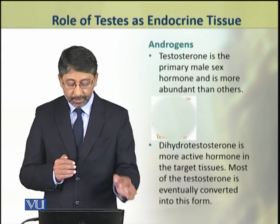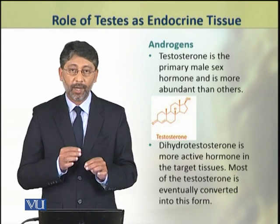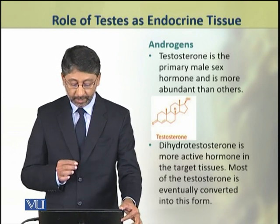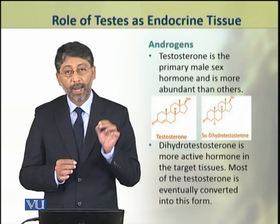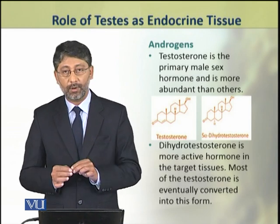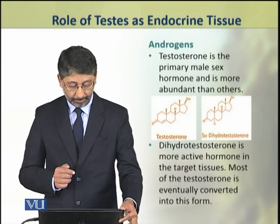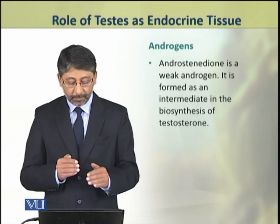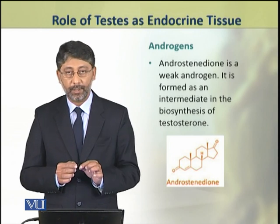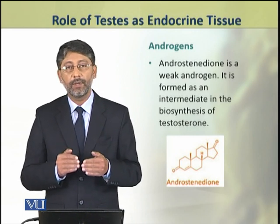Androgens include three major hormones. Testosterone is the primary male sex hormone and the most abundant of the three. Dihydrotestosterone is the more active hormone in the target tissues, so most testosterone is converted into this form by the target cells. The third androgen, androstenedione, is a weak androgen formed as an intermediate in the biosynthesis of testosterone.